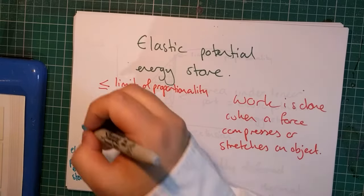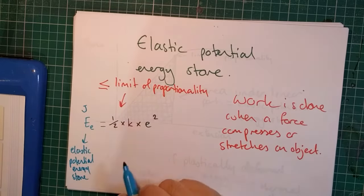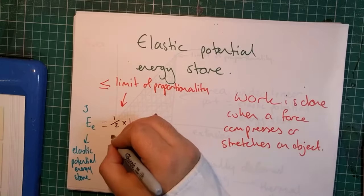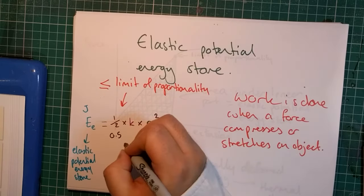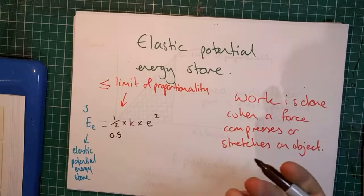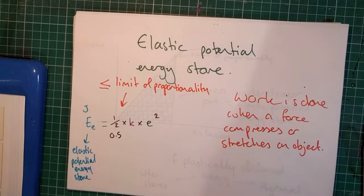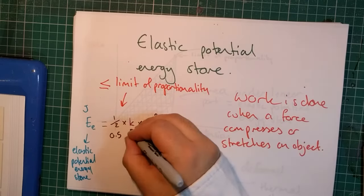The elastic potential energy store has a unit of joules. The half is basically the same thing as 0.5. You could use either one in your calculator and you'll find the same answer. k is the spring constant we mentioned before.